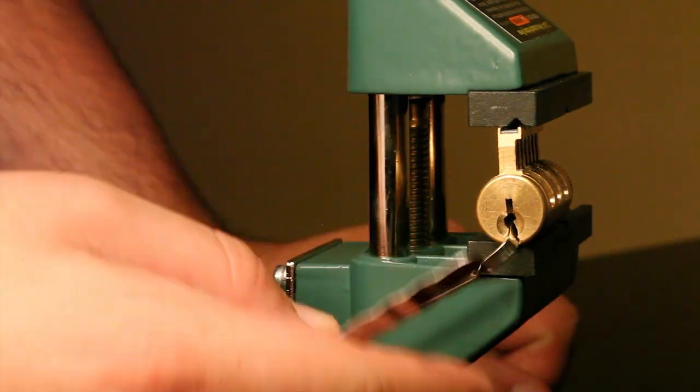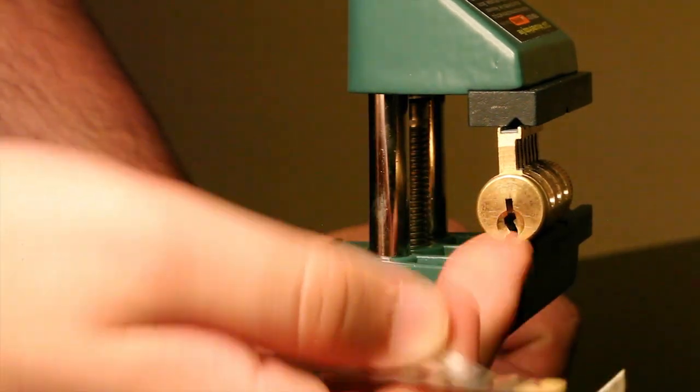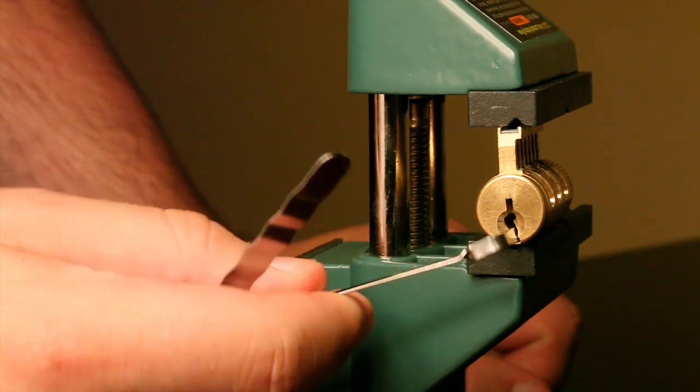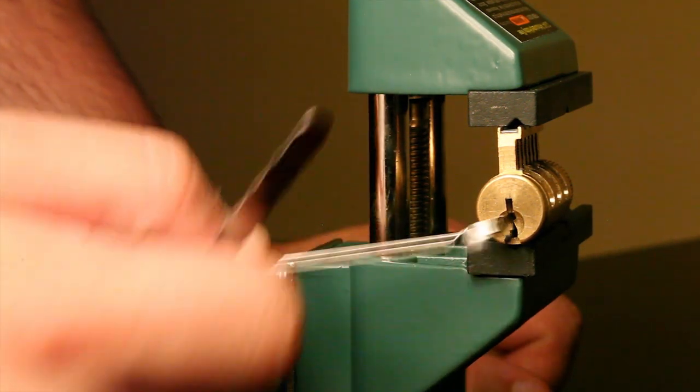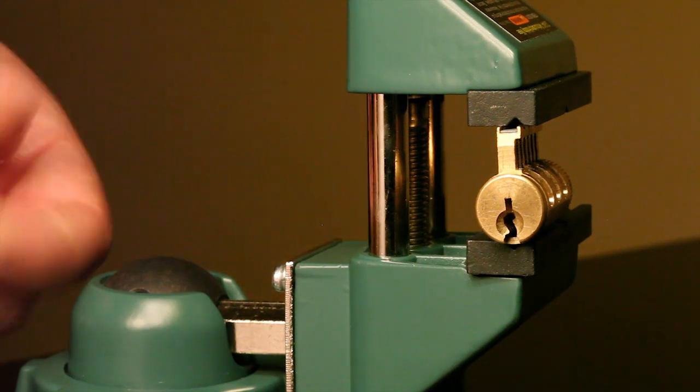Additionally, sometimes your tension wrench can cam into the housing of the lock, which can give a false impression of pin binding or not binding. So, we also have the option of top tension.